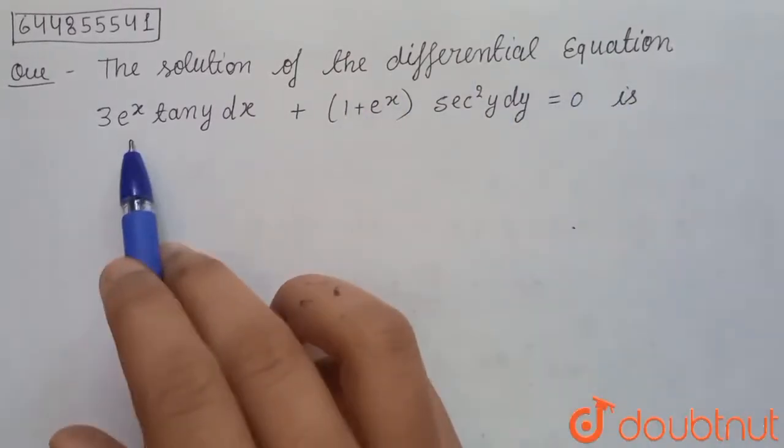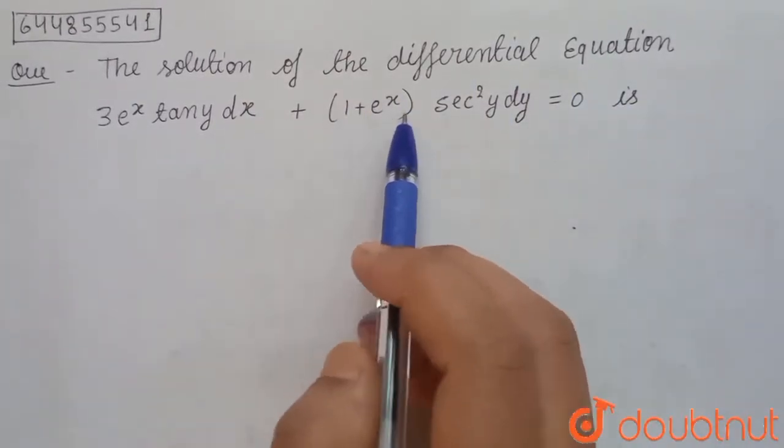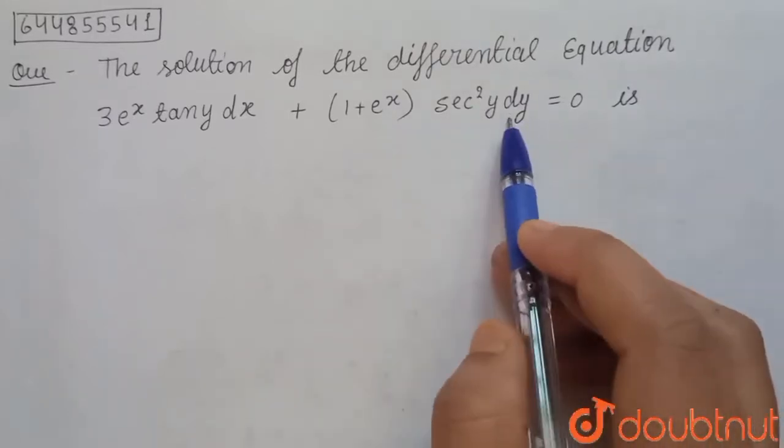the differential equation 3e^x tan y dx plus (1 plus e^x) sec²y dy equals 0.